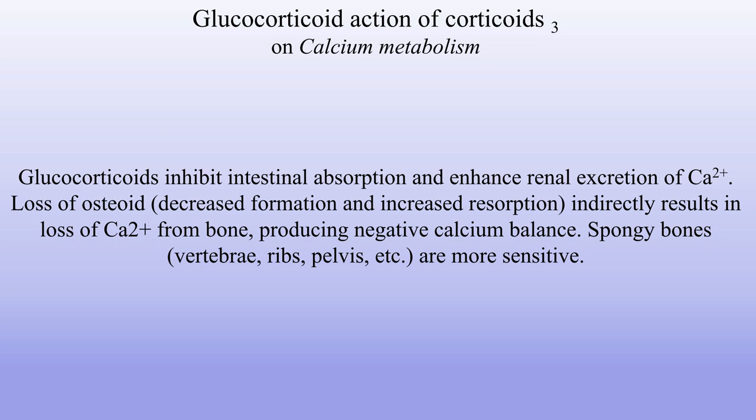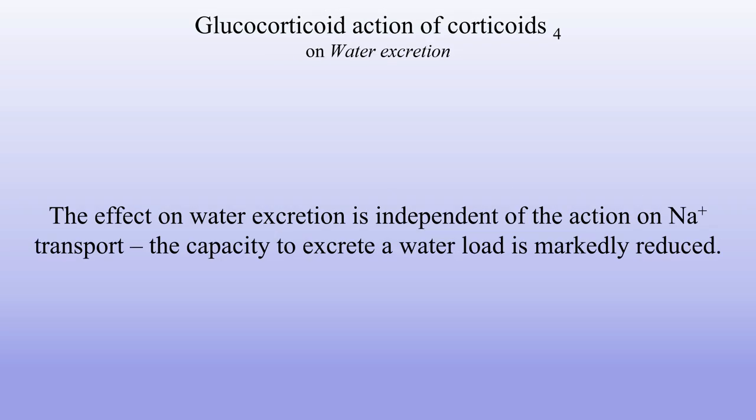Action on calcium metabolism. Glucocorticoids inhibit intestinal absorption and enhance renal excretion of calcium. Loss of osteoid, decreased formation and increased resorption, indirectly results in loss of calcium from bone, producing negative calcium balance. Spongy bones — vertebrae, ribs, pelvis — are more sensitive. Action on water excretion: the effect is independent of sodium ion transport, and the capacity to excrete a water load is markedly reduced.